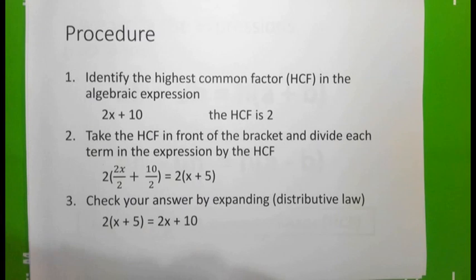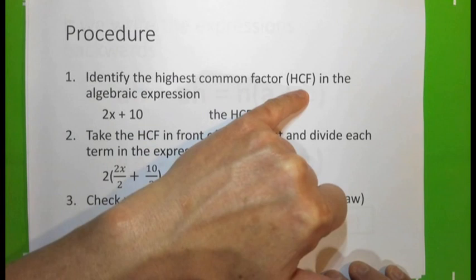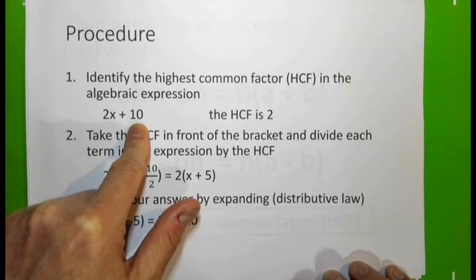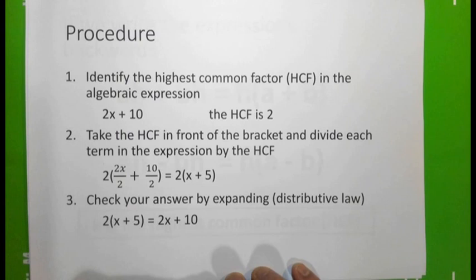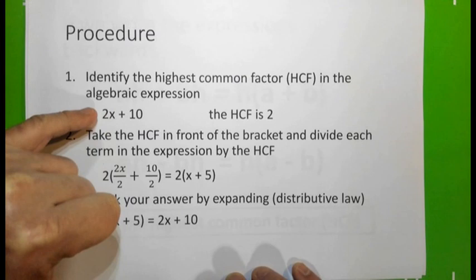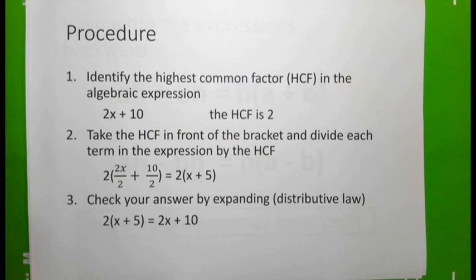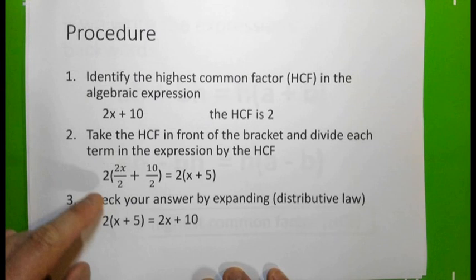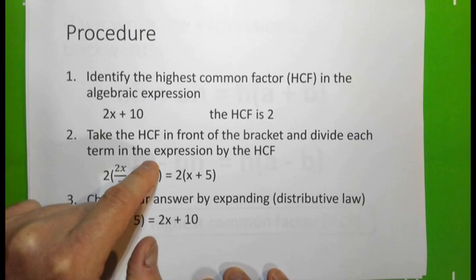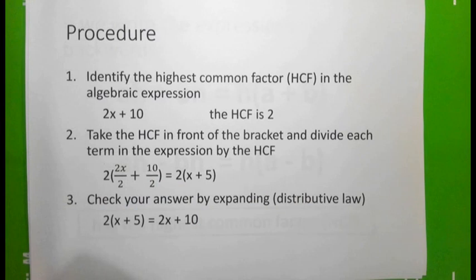First, we need to identify the highest common factor, or HCF, in the algebraic expression. Take this example: 2x + 10. What is the highest common factor? In this case it is 2, because 2x can be divided by 2 and 10 can be divided by 2. So what we do is put a bracket in this algebraic expression, take the highest common factor in front of the bracket, and divide each term in the expression by the HCF. If we take 2 out, we divide 2x by 2 and divide 10 by 2.